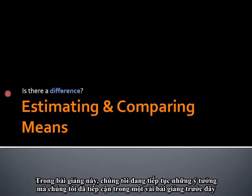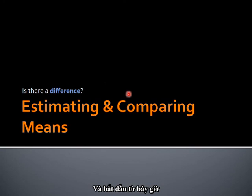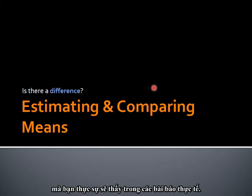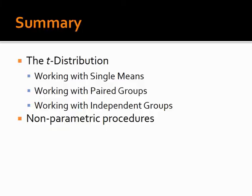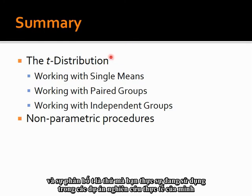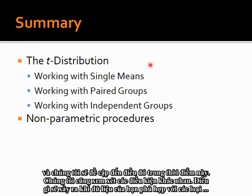In this lecture we are continuing the ideas from the past few lectures: how do we actually show a statistical difference? Now that we've built up the background, we're going to be moving a lot faster as we introduce many of the actual statistical tests you'll be using in your research projects or seeing in journal papers. We start this lecture by introducing the T distribution, which is actually a replacement of the Z distribution.